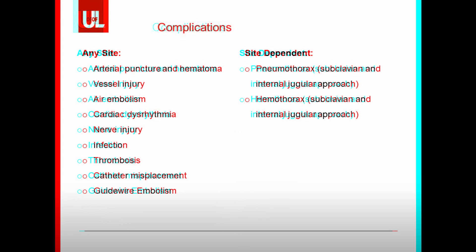There are certain potential complications from placing a central venous catheter. Some complications can occur at any site and some are site dependent. Some complications are more likely during placement, while others increase in probability the longer the line stays in place. For example, guidewire embolism can essentially only happen during placement, while infection or thrombosis of the vein are far more likely the longer a line is left in place. Complications that can occur at any site include arterial puncture and hematoma, vessel injury, air embolism, cardiac dysrhythmia, nerve injury, infection, thrombosis, catheter misplacement, and guidewire embolism.